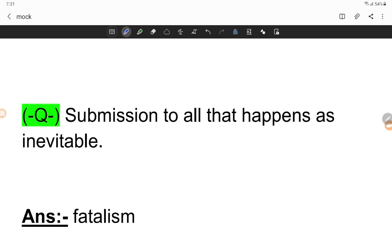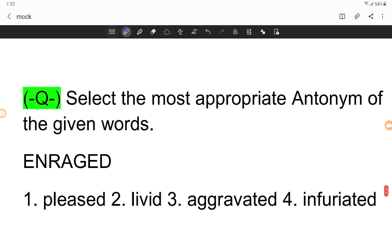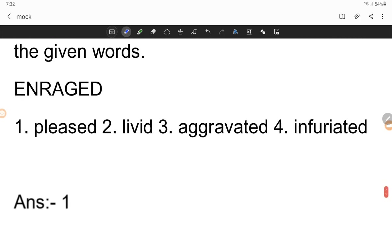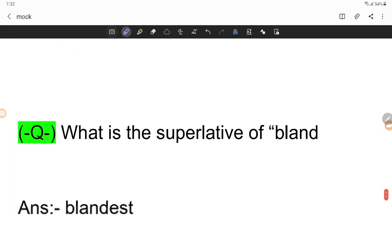One word substitution: belief that all that happens is inevitable - fatalism. Select the most appropriate antonym of the given word: enraged. The options are pleased, livid, aggravated, infuriated. The antonym is pleased, which means calm or happy, opposite of enraged.